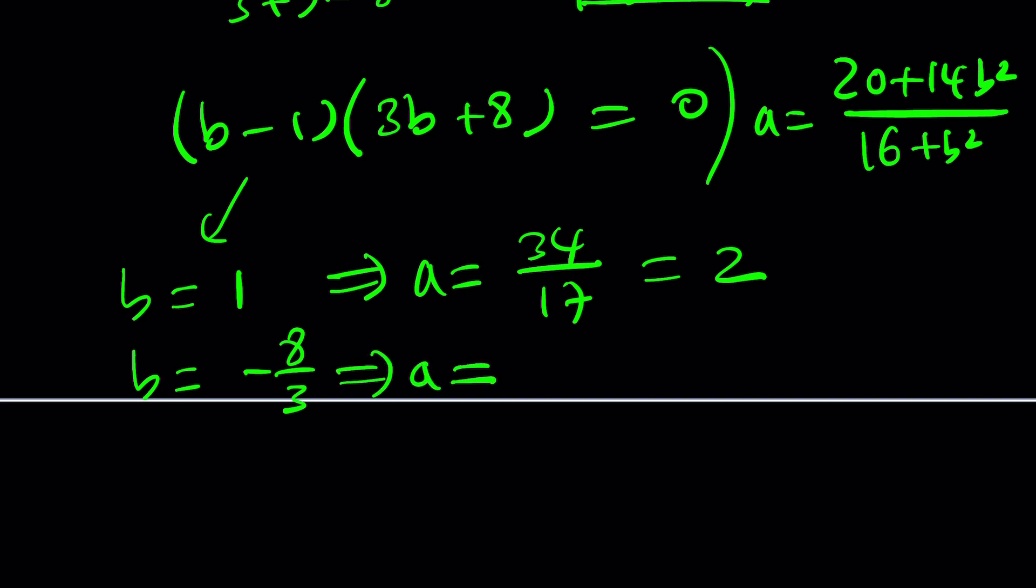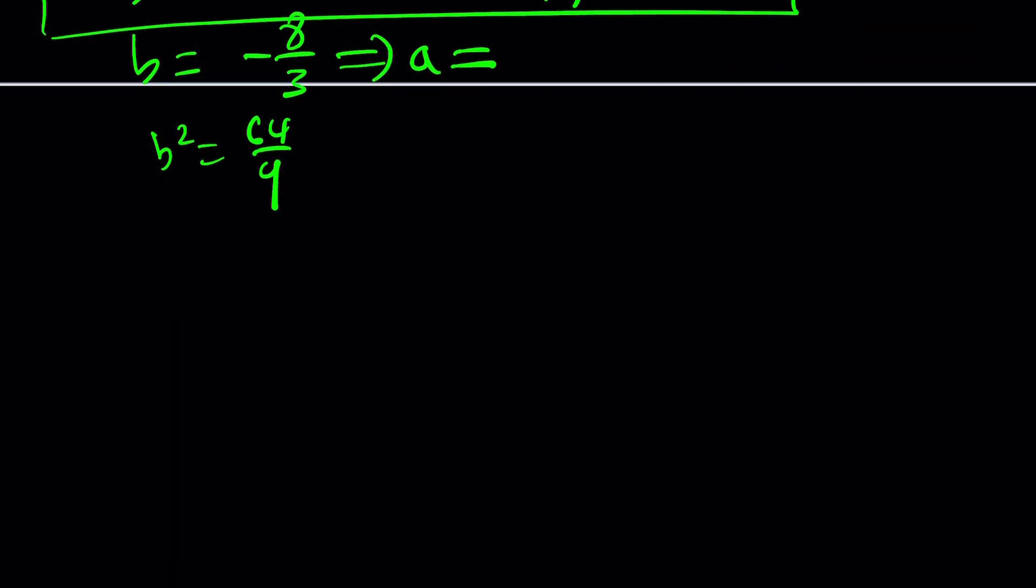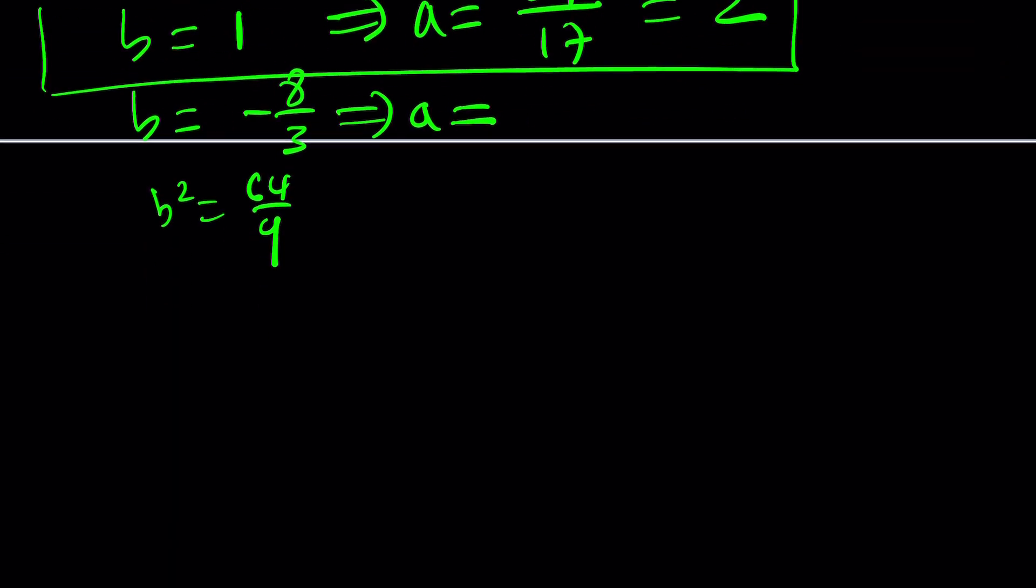And if b is equal to negative 8 thirds, it's not that nice. We have to square it first. b squared is going to be 64 over 9. I mean, you can plug it in and find the values. I'm going to leave that for you as an exercise. But here with these values, a equals 2 and b equals 1, we get the solution. And can you please find the other values because I'm too lazy.